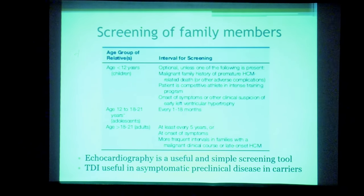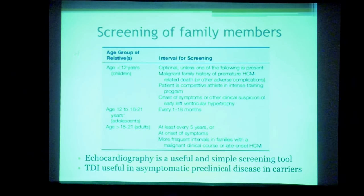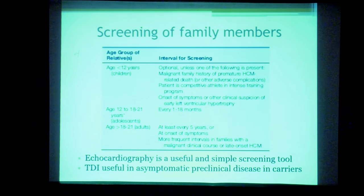Regarding screening of family members: screening is rarely indicated under the age of 12 years unless there is a malignant family history of sudden cardiac death or premature death, or if the child is engaged in competitive sports. From 12 to 21 years, annual screening every 12–18 months is recommended, as this is when the disease typically develops. Beyond adulthood — after 21 years — if no progression has occurred, screening every 5 years is sufficient, or every 2–5 years if there is a strong or malignant family history.